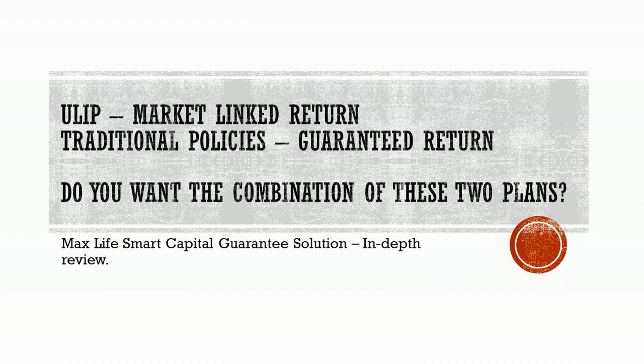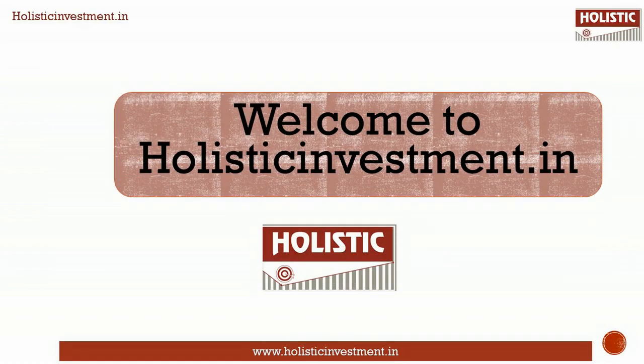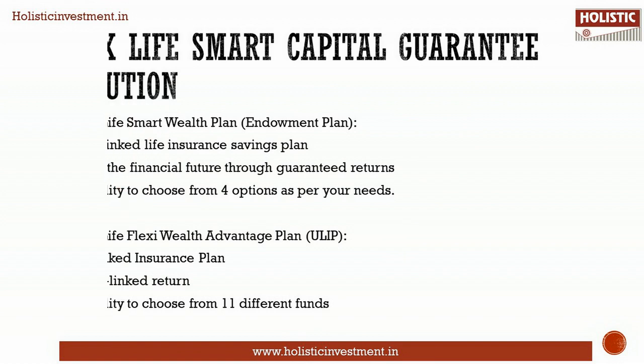Life insurance can be broadly classified as pure term plan, endowment plan, money back plan, and unit linked insurance plan. Some investors want market-linked returns through ULIP plans, while others want capital protection. Max Life has come up with a combination of these two types — endowment and ULIP — called the Max Life Smart Capital Guarantee Solution. In this video, let us understand the working of the plan and check whether it is suitable for you.